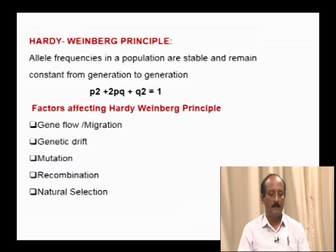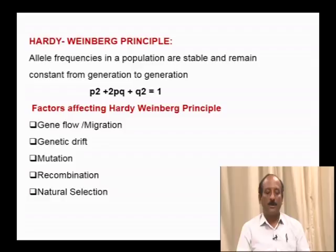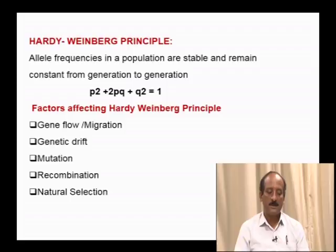Coming to the Hardy-Weinberg principle, it states that allele frequency in a population is stable and remains constant from generation to generation. It can be explained with the formula: p² + 2pq + q² = 1.